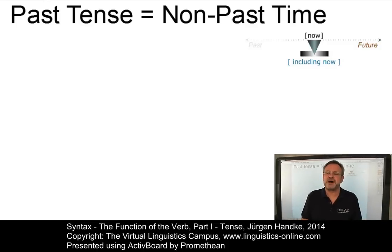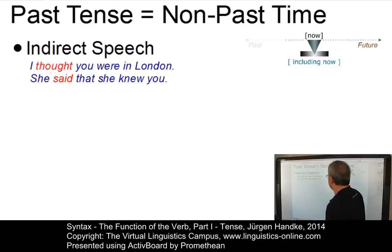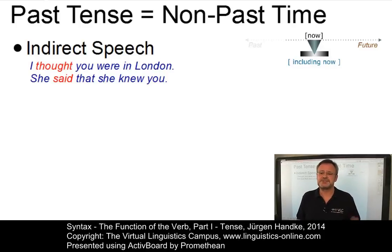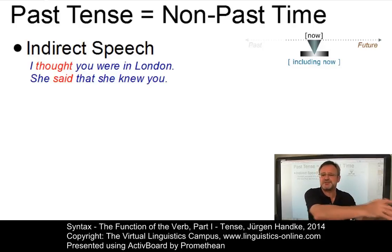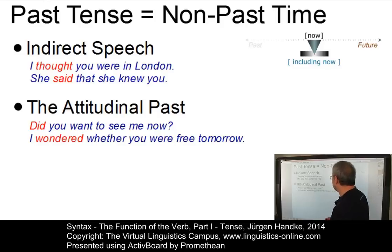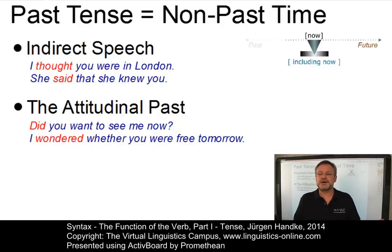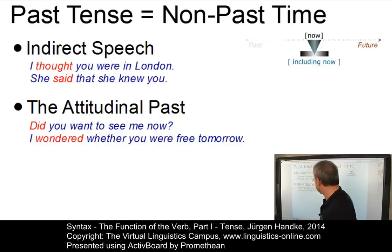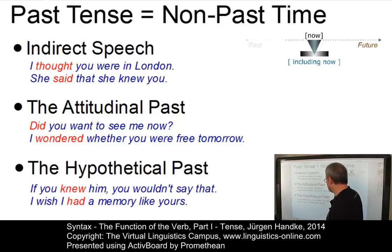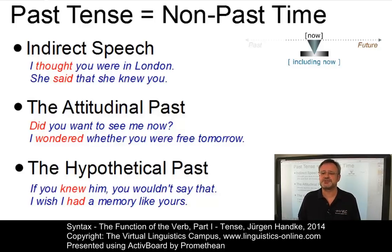Like the present tense, the past tense can also be used in contexts that do not refer to past time. There are three special uses. First, indirect speech, as in 'I thought you were in London' or 'she said that she knew you' — the simple past in the reporting verb may cause the verb in the subordinate reported clause to be backshifted into the simple past. Second, the attitudinal past, as in 'did you want to see me now?' or 'I wondered whether you were free tomorrow' — optionally used to refer more tentatively to a present state of mind. Third, the hypothetical past, as in 'if you knew him, you wouldn't say that' or 'I wish I had a memory like yours' — used in subordinate clauses, especially if-clauses, to convey what is contrary to the belief or expectation of the speaker.